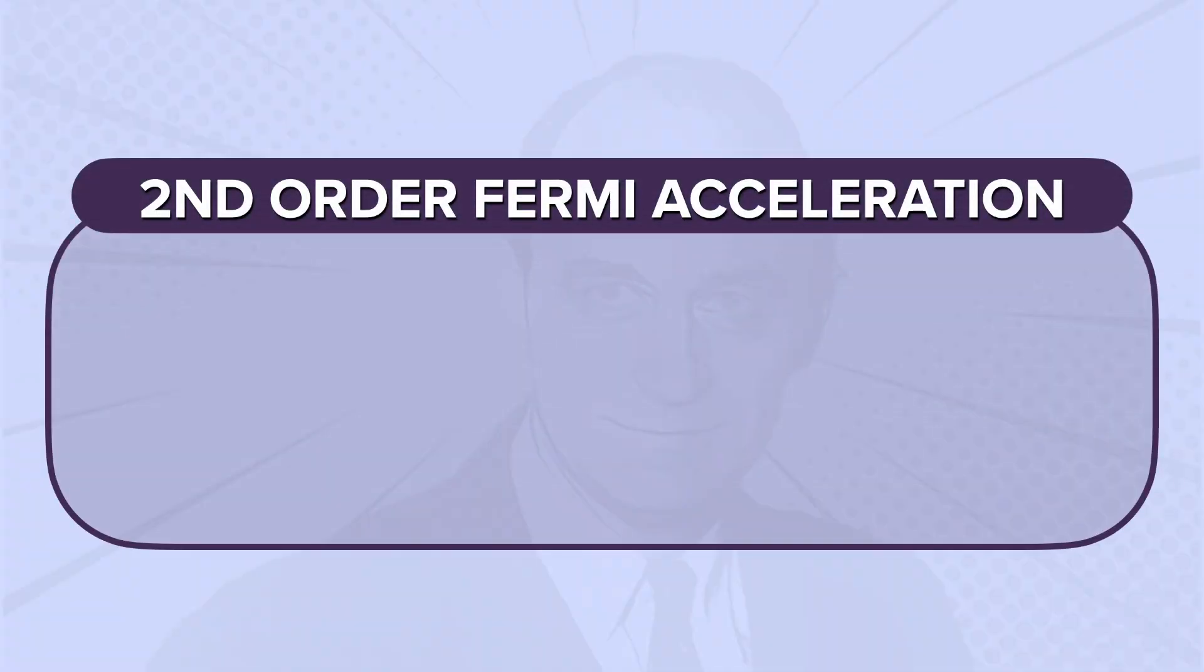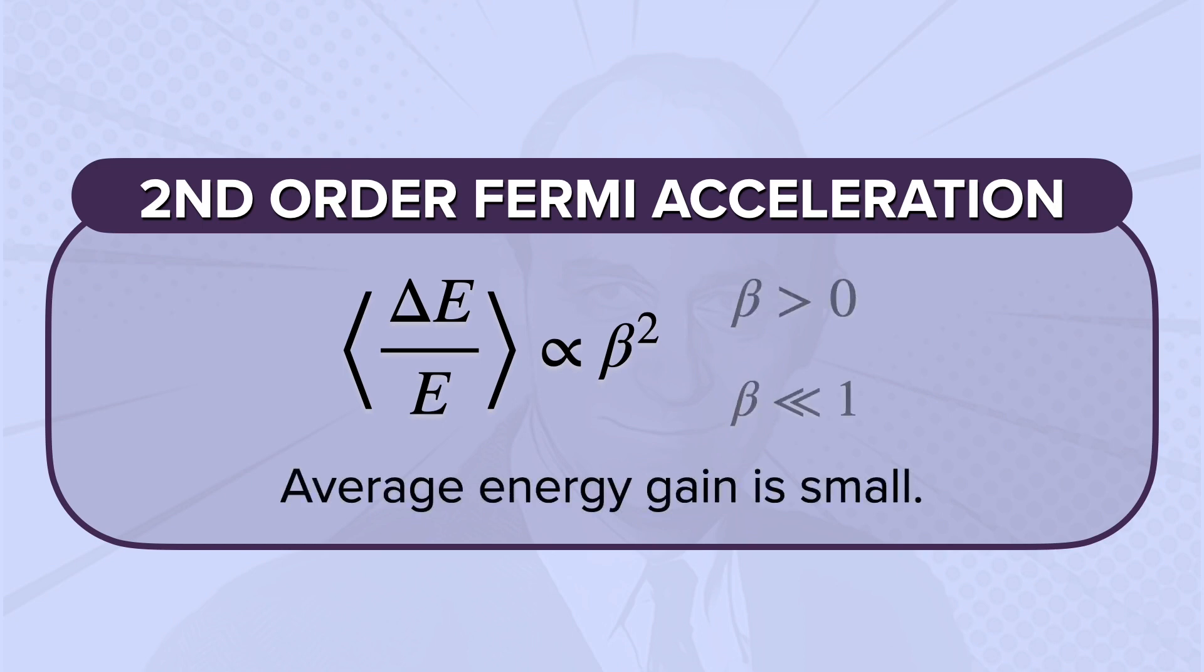Finally, we have the second-order Fermi acceleration equation, where the fractional energy change is proportional to beta squared. Now, beta is always positive, and beta is also very small. Therefore, the average energy gain is small.